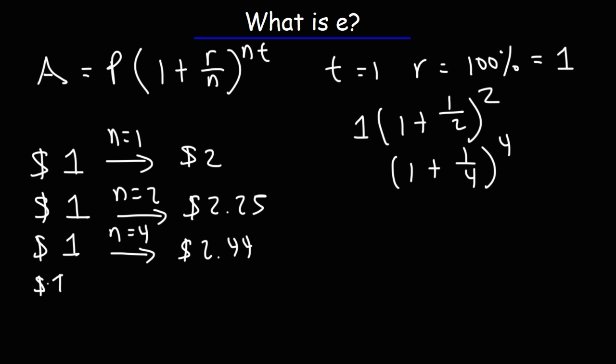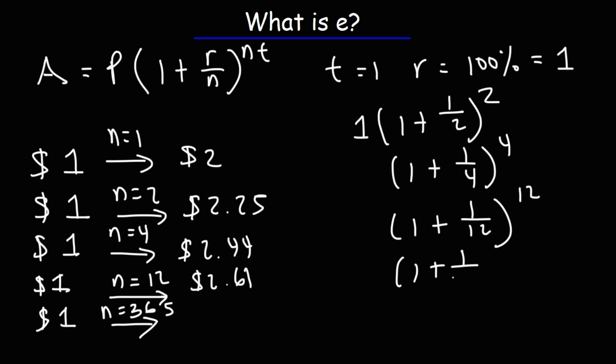Now, what about if it's compounded monthly? Let's say if you receive 12 interest payments in one year. So it's going to be 1 plus 1 over 12 raised to the 12th power, which is $2.61. And then let's say if the interest was paid out daily, that is, if n is 365, this is going to be 1 plus 1 over 365 raised to the 365. You'll get $2.71.